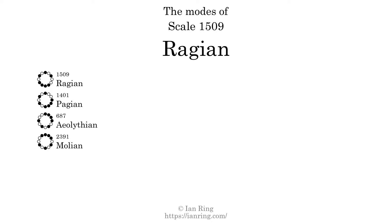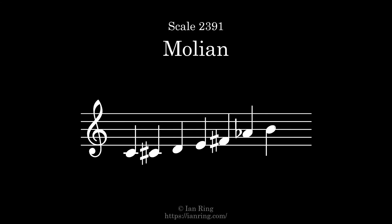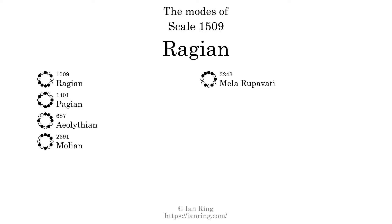The fourth mode is scale 2391, also known as Molian. It sounds like this. The fifth mode is scale 3243, also known as Mila Rupabati. It sounds like this.